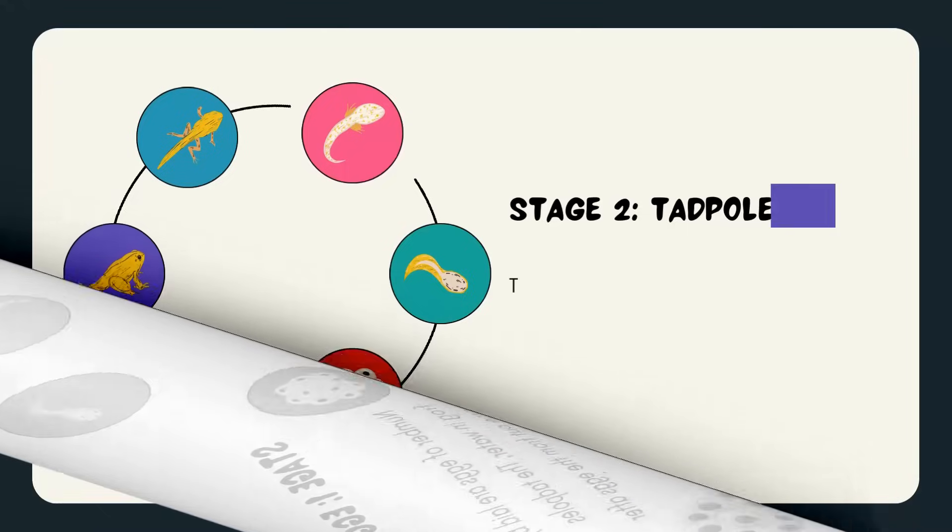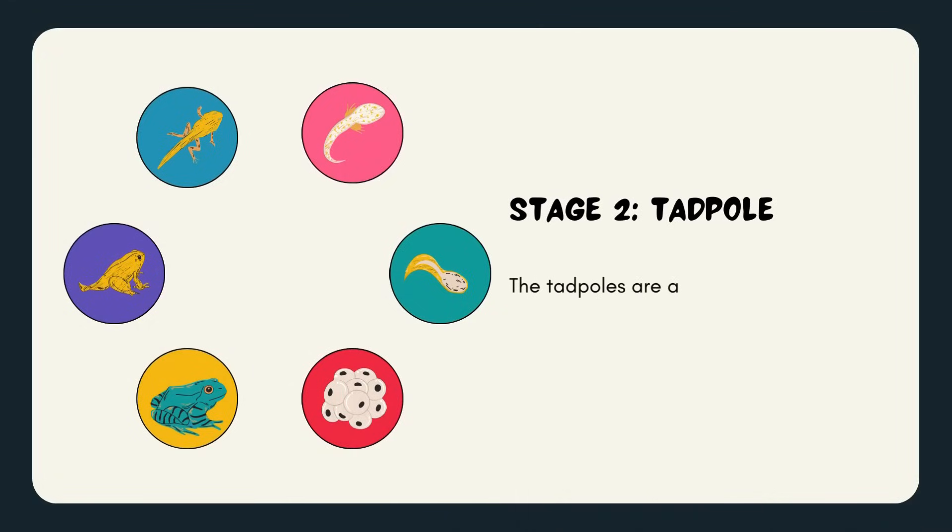Stage 2: Tadpoles. The tadpoles are actually larva of the frog. The larva of the frogs are herbivores where they feed on the soft decaying plants.